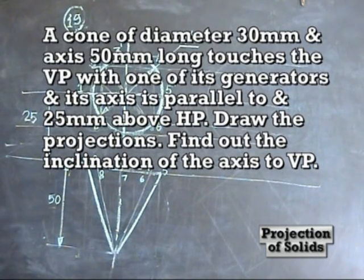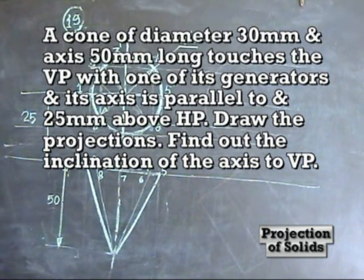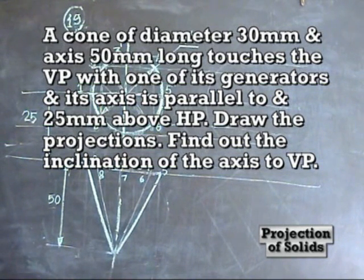Problem number 19: a cone of diameter 30 mm, axis 50 mm long, touches the VP with one of its generators and its axis is parallel to and 25 mm above HP. You have to draw its projection.